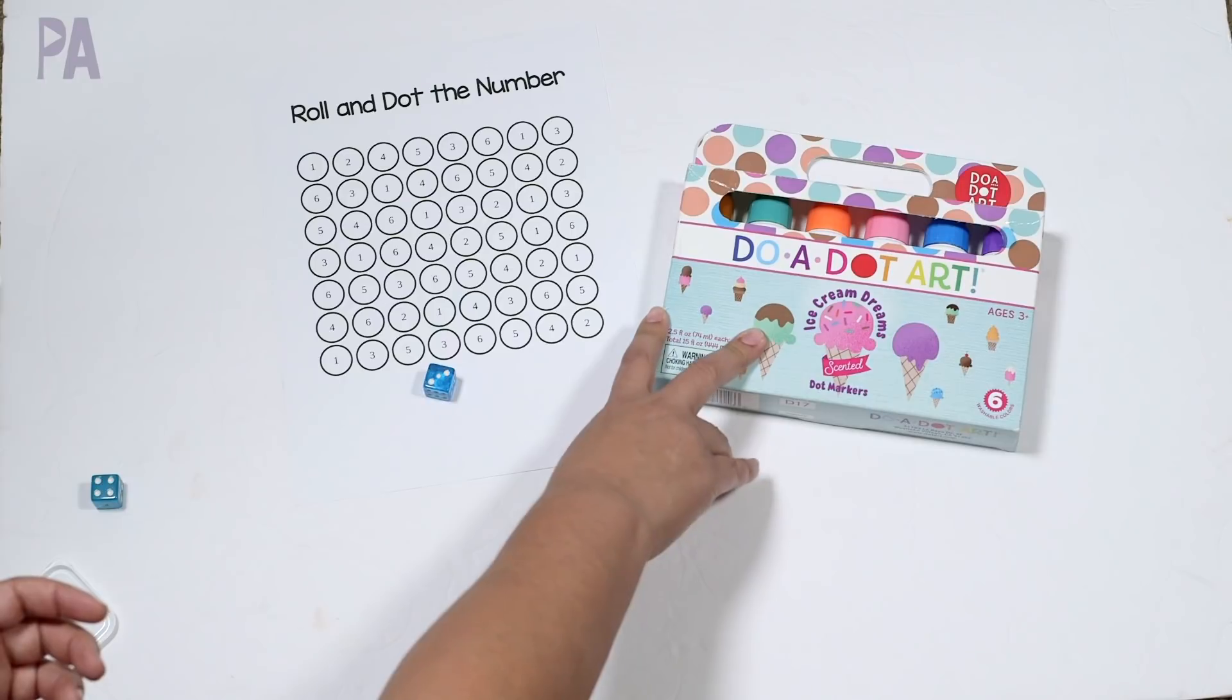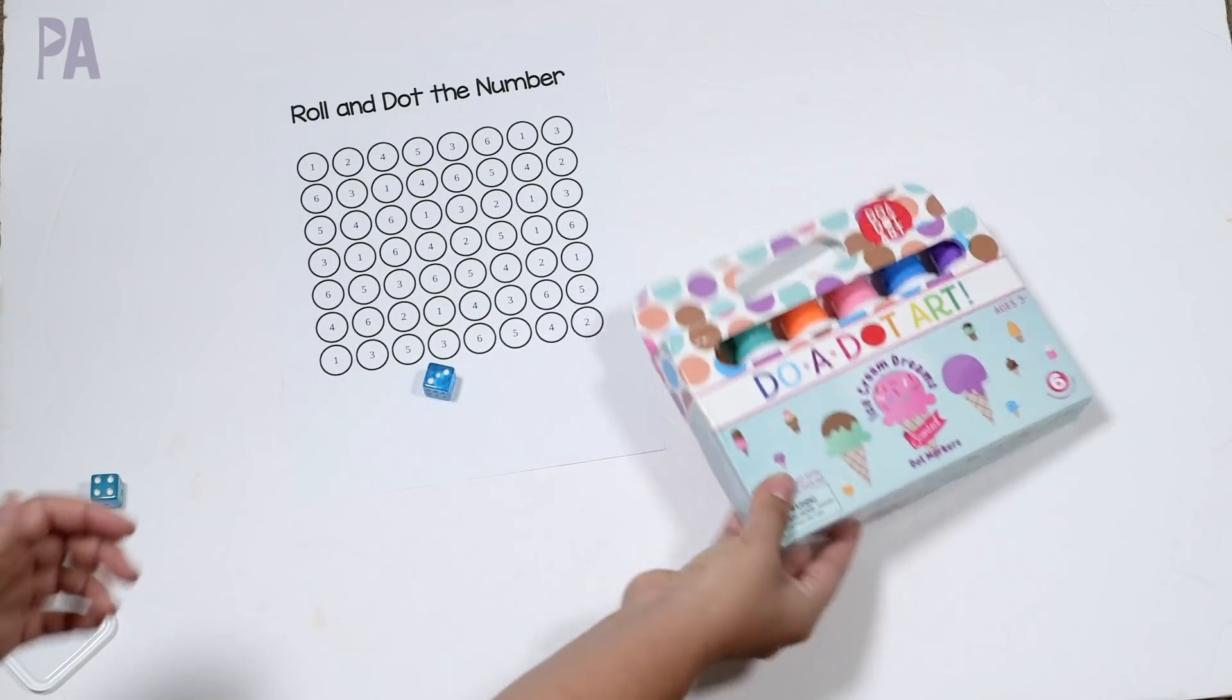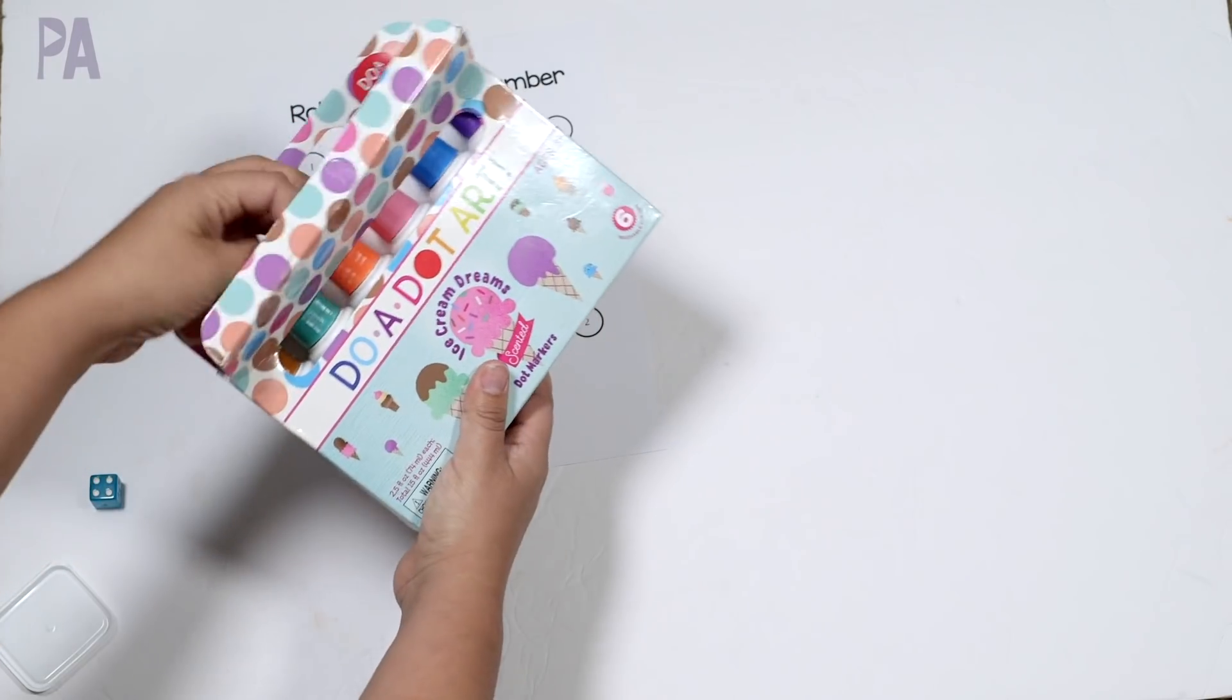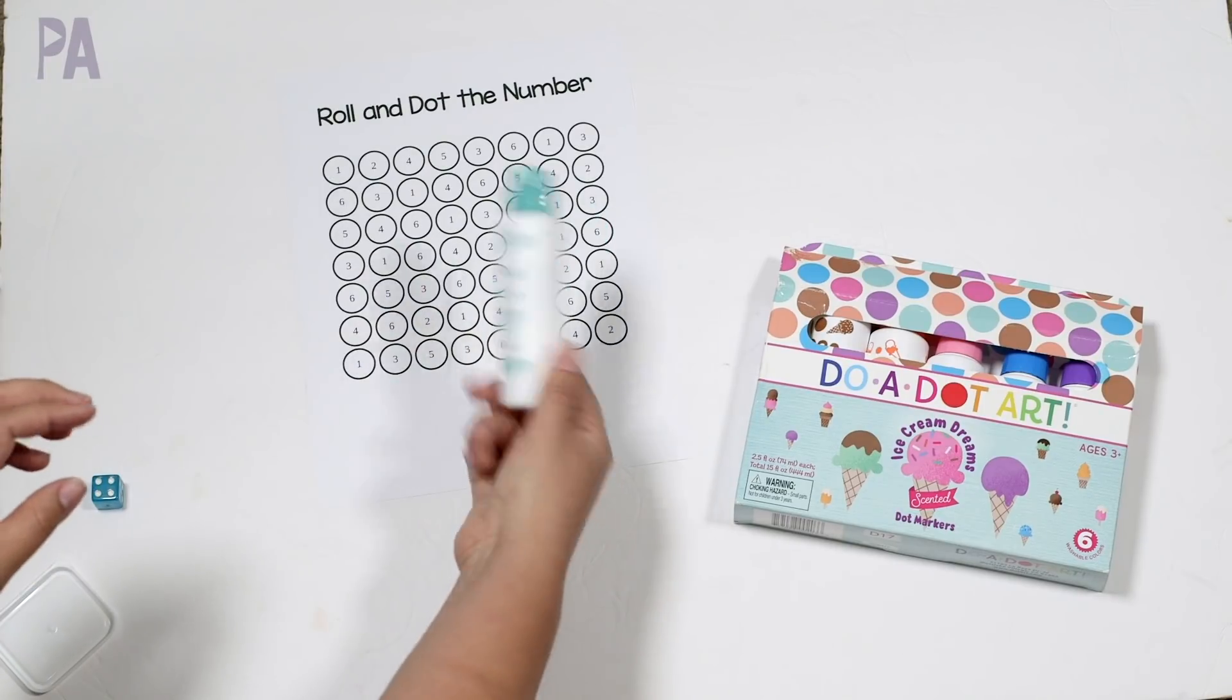So I pulled out my doodot markers here. I love my doodot markers. These are the scented ones that I got at Lakeshore Learning, but I also think they're on Amazon and they just smell so good. So we love these. One is mint chocolate or mint chip. I love it. They're so cute.